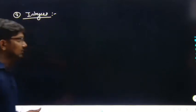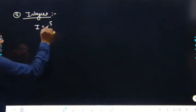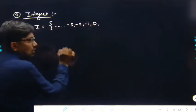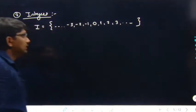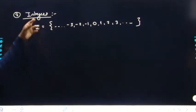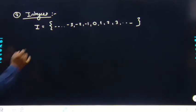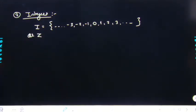Integer numbers में सारे counting numbers, 0, और negative numbers भी include होते हैं। Integers को I से represent किया जाता है, और numbers रहेंगे: {..., -3, -2, -1, 0, 1, 2, 3, ...}। Integers को I के साथ-साथ Z से भी represent किया जा सकता है।